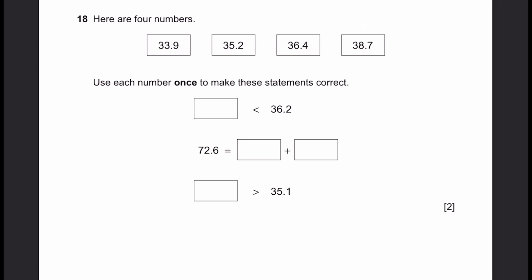Question 18. Here are four numbers. Use each one once to make the statements correct. Dash less than 36.2. So only two numbers here. So we will find out which one we need to do later. 72.6 is equal to dash plus dash. So if you think, okay, 0.2 plus 0.4 is 0.6. So we get that, right? But then when we add these two, we get 71.6. It's not right. So let's add the other two. Just try it out. And when we add these, we actually do get 72.6. So we can write these. I remember what I was saying of these two being the only ones over here. Now this one's gone. This one's gone. This one has to be there, 35.2. And the last one, 36.4, that fits over here. Since it is greater than 35.1. That's the answer.